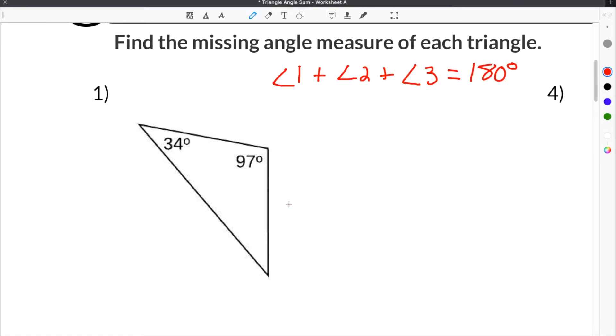So in the case of our first problem, we are given 34 degrees, 97 degrees, and then we're missing this angle here. So we have to find this missing angle. The easiest way to do this is to add up these two,